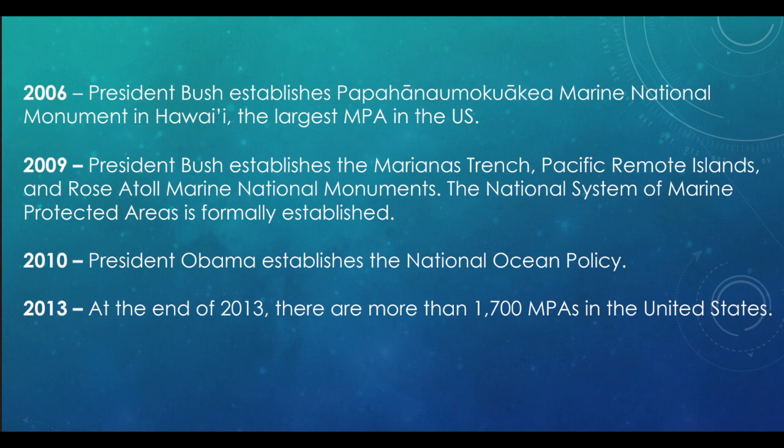In 1976, we have the Magnuson-Stevens Fishery Conservation and Management Act — a very important piece of legislation. It was a bipartisan bill, so both Republicans and Democrats worked together. It created American jurisdiction over fishing in the ocean and determined what water is ours — what part of the ocean the U.S. can control from our shoreline. The goal was also to prevent overfishing and to rebuild fish populations that had declined.